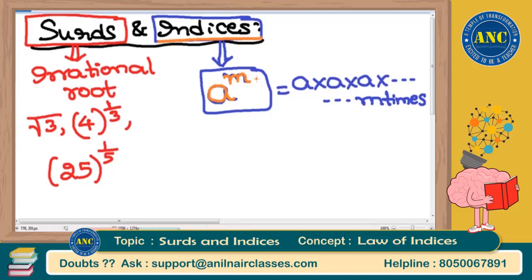A surd is an irrational root that will not give you a rational number. For example, square root of 4 equals 2, which is a rational number — so square root of 4 is not a surd. But square root of 3 gives approximately 1.73, which is irrational — so that is considered a surd. This is what we are discussing: surds and indices.